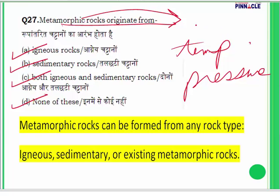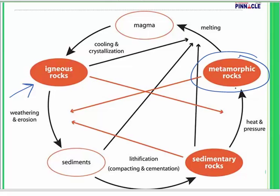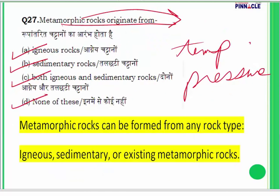There is a rock cycle by which a sedimentary rock can change into a metamorphic rock and vice versa. Igneous rocks are formed by lava or magma from the earth. When igneous rocks undergo change due to temperature and pressure, they become metamorphic rocks. When metamorphic rocks are carried away by running water and deposited, they form sedimentary rocks. Metamorphic rocks can be formed from igneous, sedimentary, or existing metamorphic rocks. The answer for question 27 is C — both igneous and sedimentary rocks.